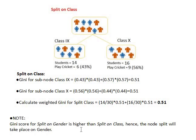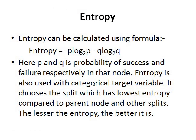We also use another method called entropy. Entropy is calculated using the formula: −p·log₂(p) − q·log₂(q), where p is the probability of success and q is the probability of failure. Entropy is also used with categorical target variables. We choose the split which has the lowest entropy compared to the parent node. Lesser the entropy, better it is for the decision — so we choose the variable with lower entropy.